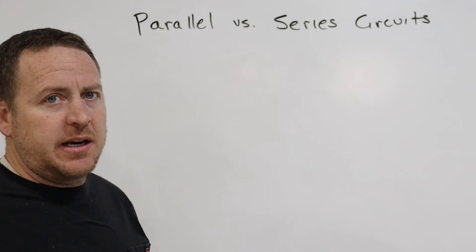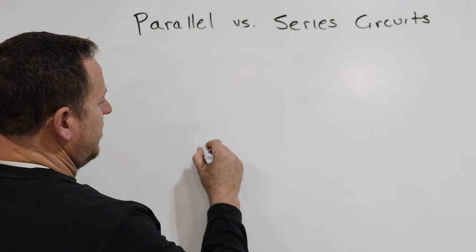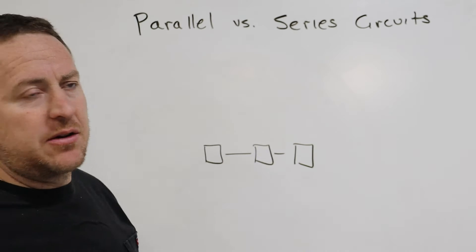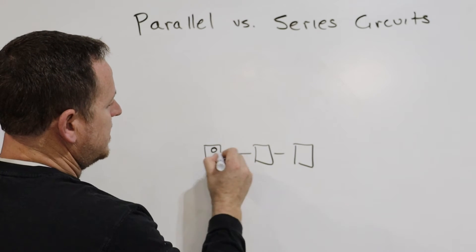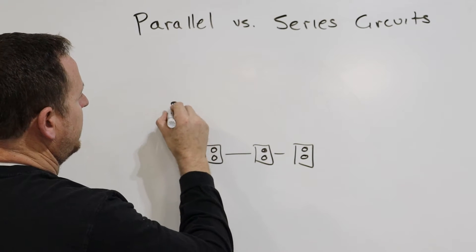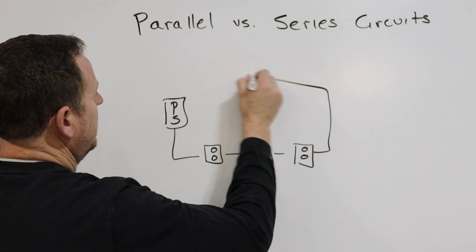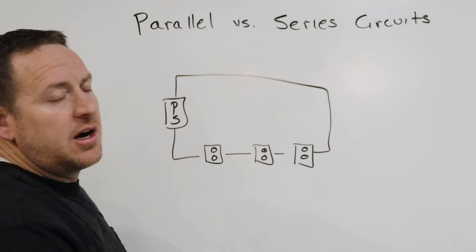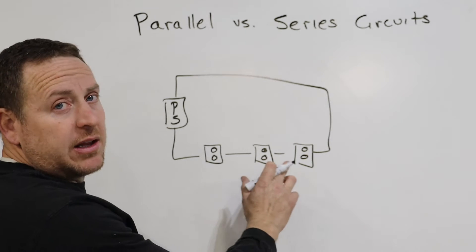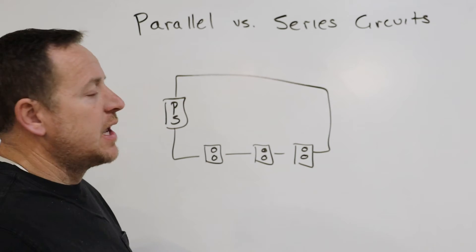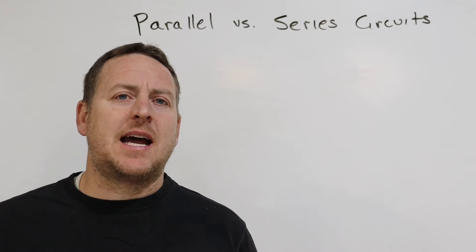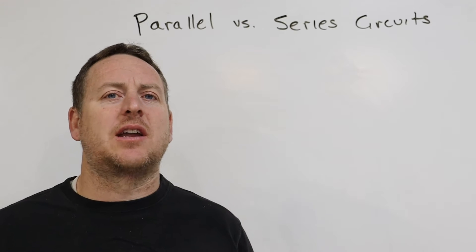When you think about something in series, you think about one thing and then another thing and then another thing. So if these were outlets in your house all in series, it's easy to think they're wired one outlet after another, but this isn't a true series circuit in your home. What I think is an absolutely excellent example of a series circuit is your old Christmas lights.